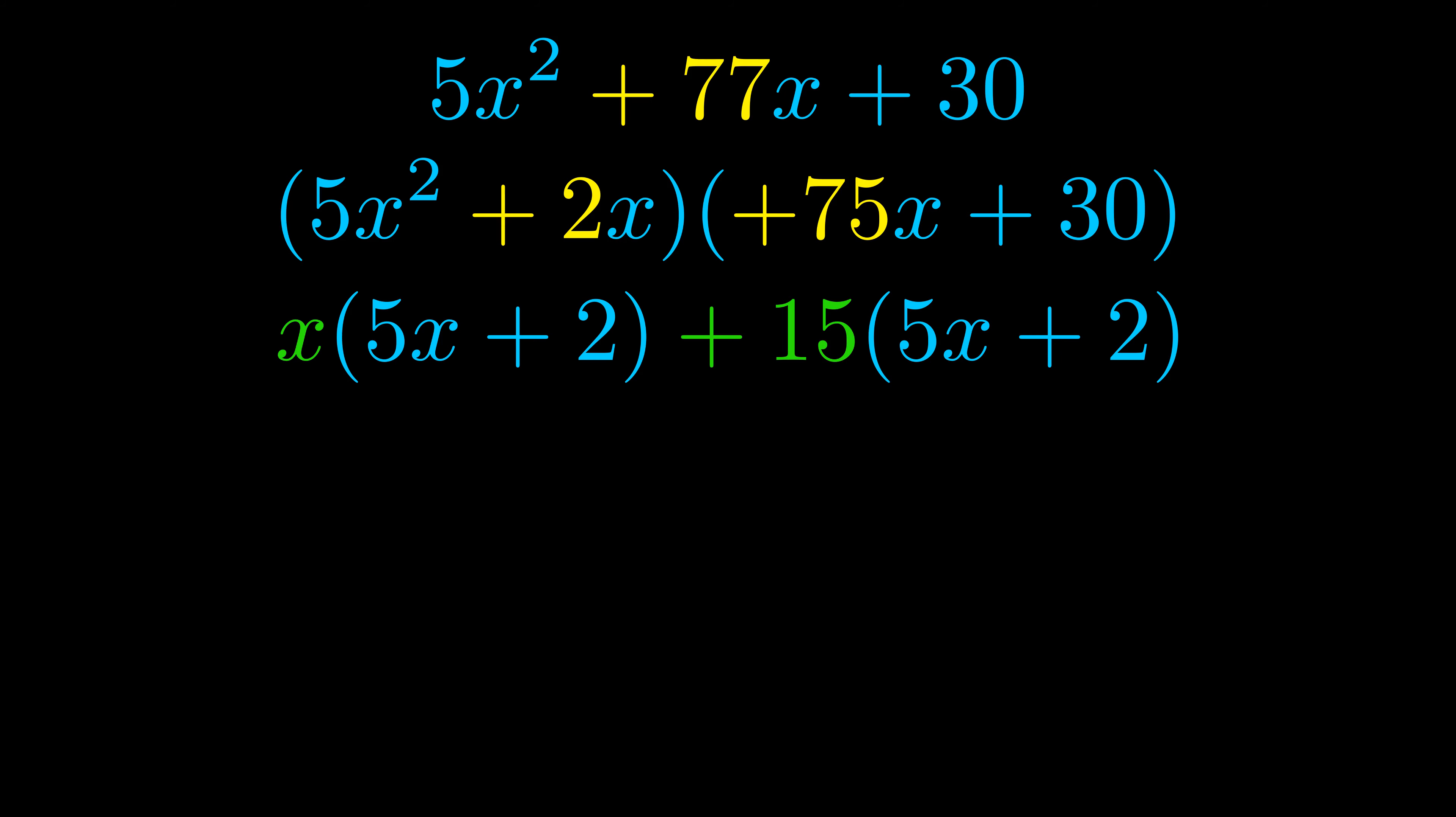Notice also how what remains inside of the parentheses is the same in both cases. The blue values are the same. Those blue values will become one of our factors and we will combine the two green values, the GCFs that we pulled out, to get the other one. And that is our fully factored equation.